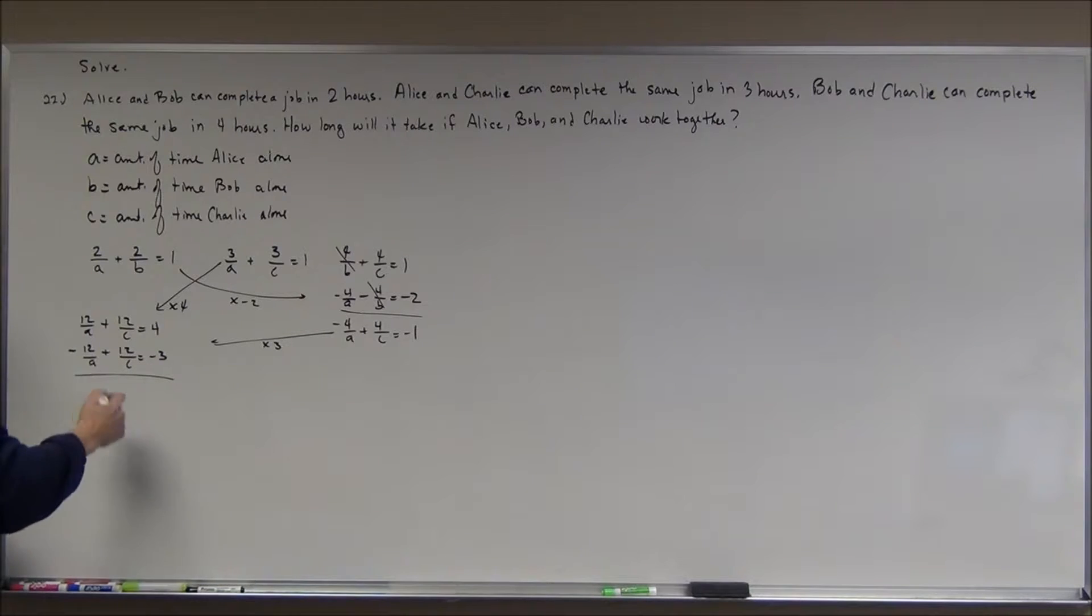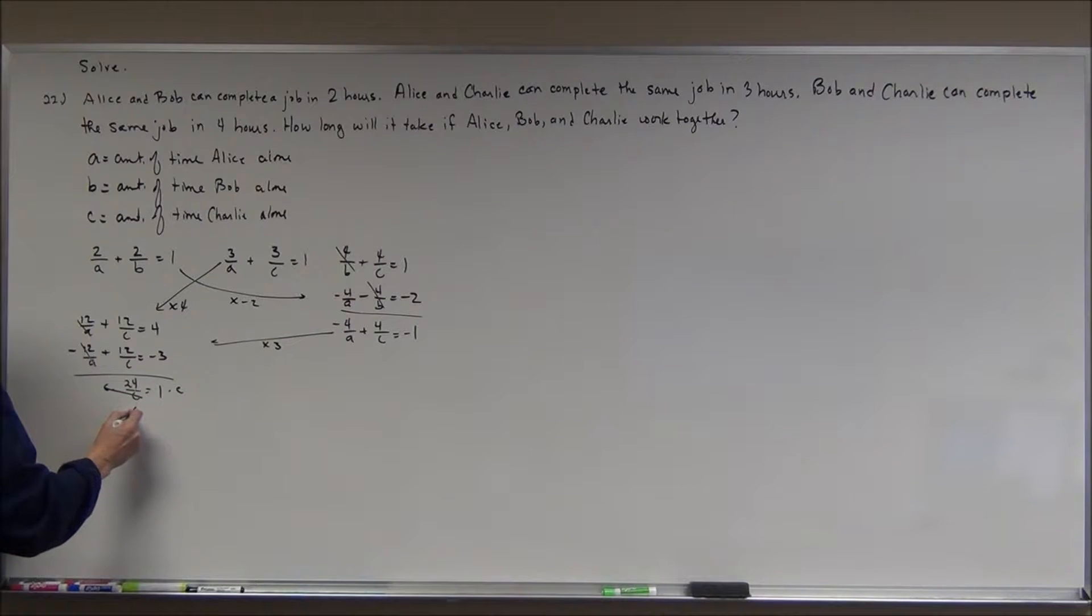So, now, if I add them together, these cancel. I get 12 over C plus 12 over C is 24 over C. 4 plus a negative 3 is 1. If I multiply both sides by C, I get C is equal to 24. That's my first answer, first part of my answer.